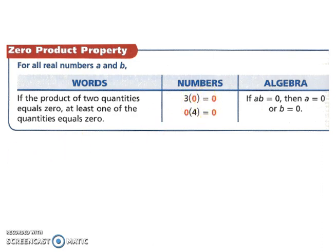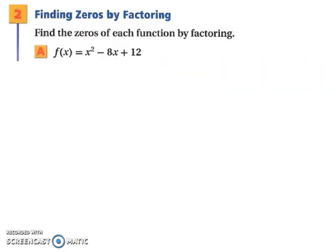We're going to use this product property to help us find zeros by factoring. We can rewrite this, since we're trying to find zeros, as x squared minus 8x plus 12 equals 0. So to factor, you're going to have to recall all the way back to algebra 1 here. You want two numbers that multiply to give you 12, but when you add them together, you're going to get negative 8.